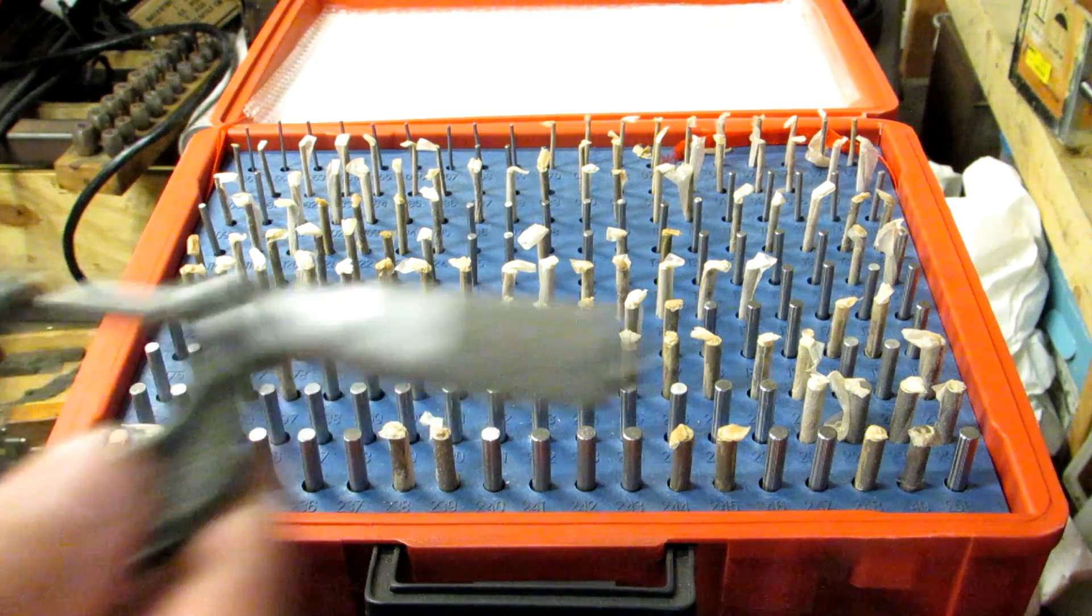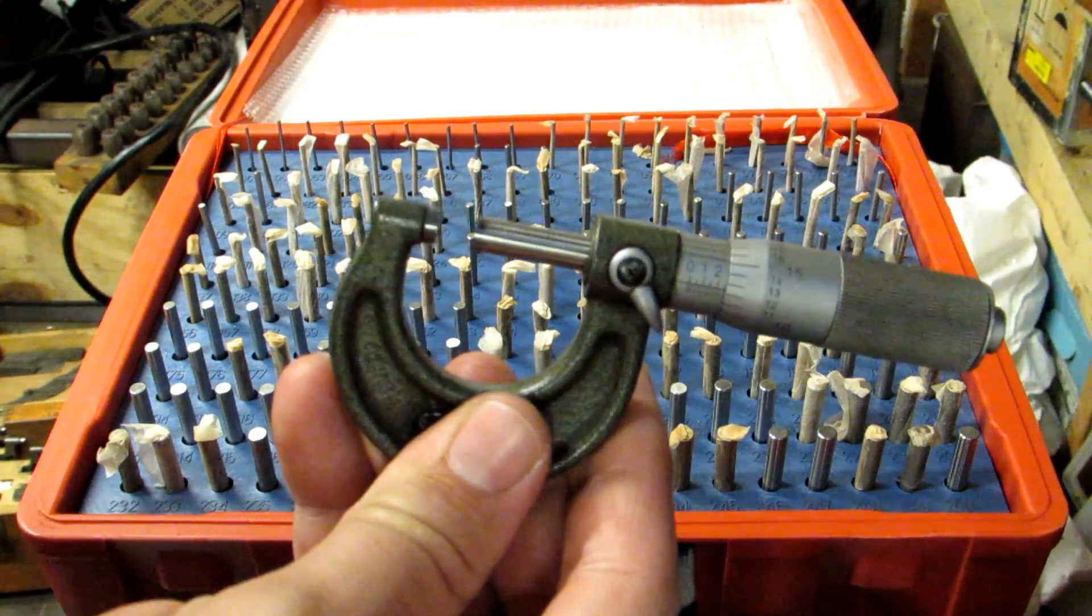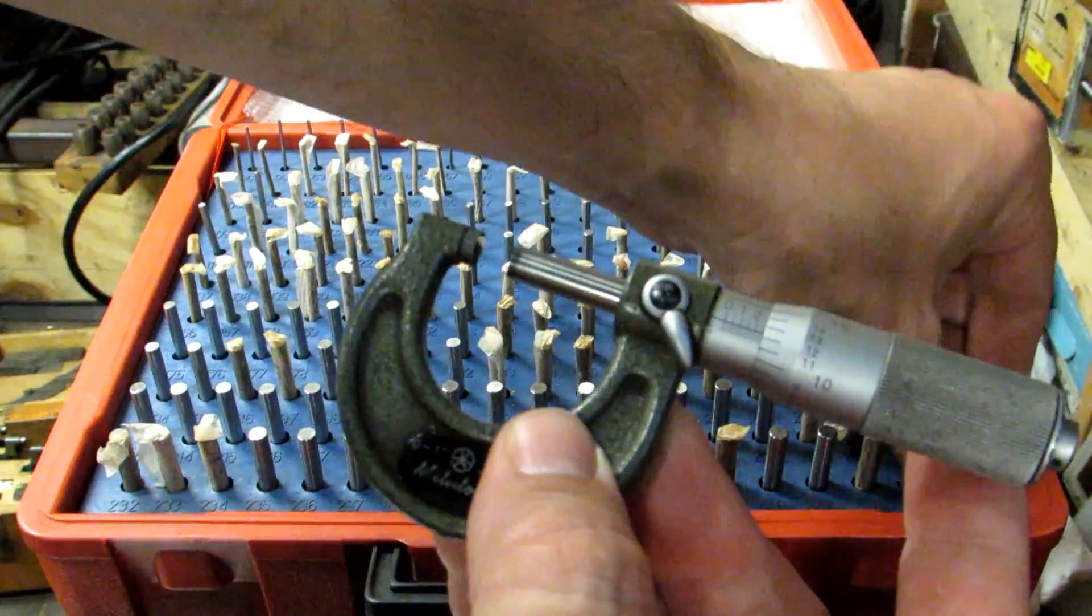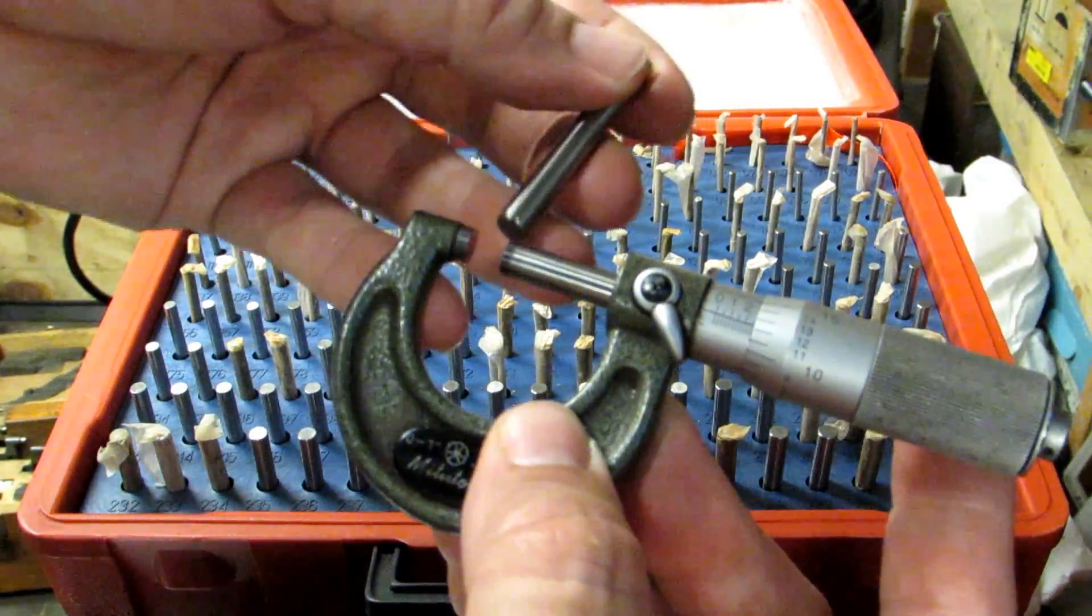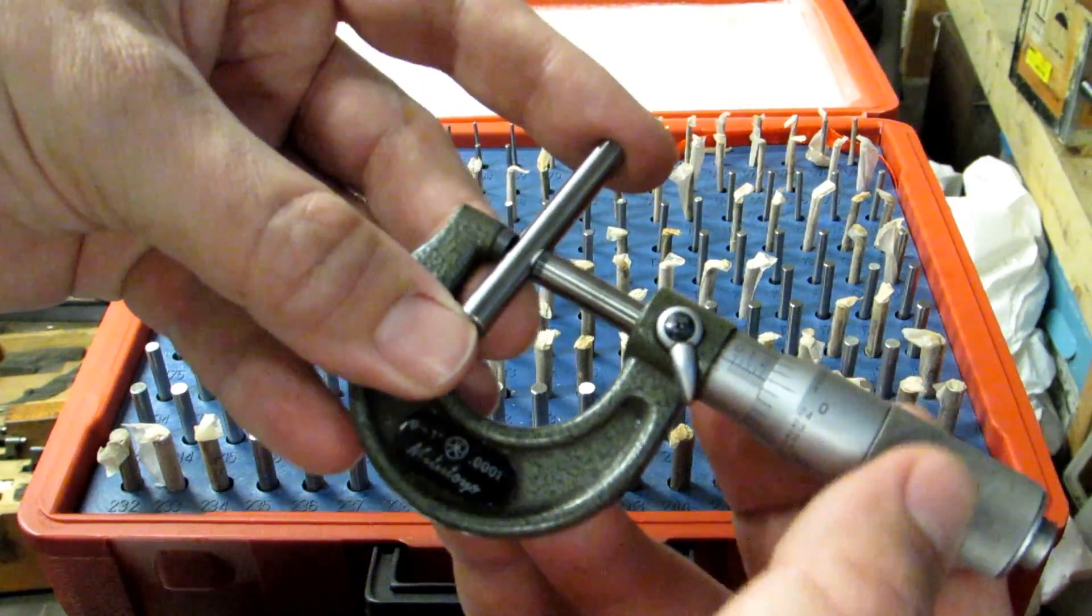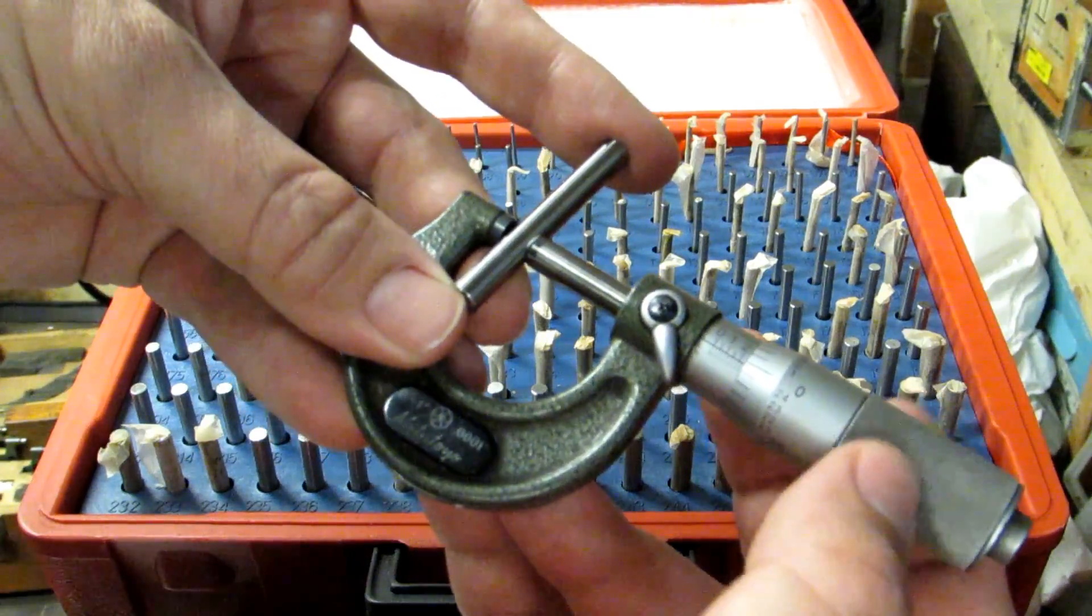Another use for these would be to make sure that your micrometer reads the correct amount at the dimension that you're shooting for. If I were shooting for 250 thousandths, I could grab my 250 thousandths pin and make sure that my micrometer reads the correct amount.